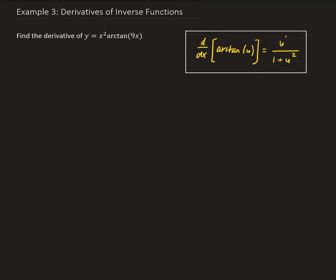In this example, we want to find the derivative of y equals 2x squared times arctan of 9x. To do this, we need to apply the product rule and use the fact that the derivative of arctan of u with respect to x is going to be u prime over 1 plus u squared, where u is a differentiable function of x.